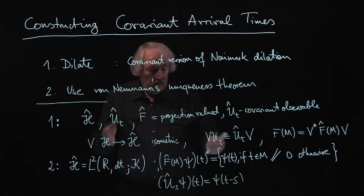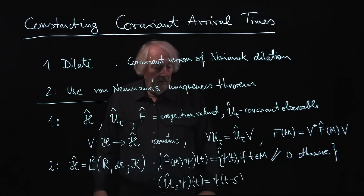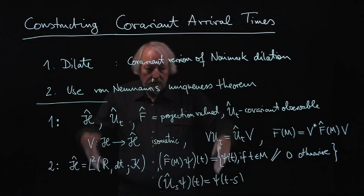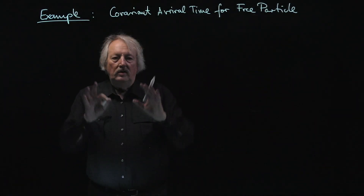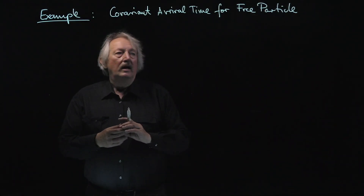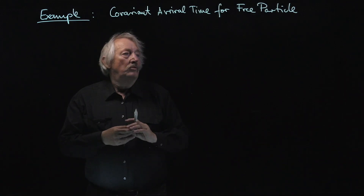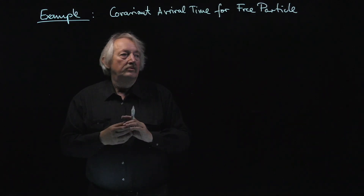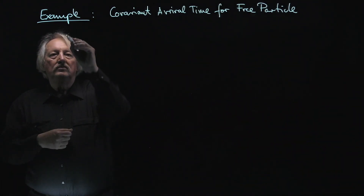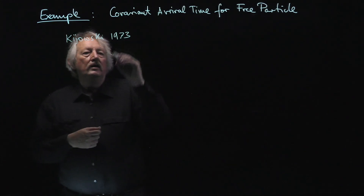We now just have to find the intertwining operators between the standard position–momentum pair and our system, and from that we get all possible covariant observables. As an example, let's apply this construction to the case of a free particle. The Hamiltonian is p²/2m. It's a straightforward question to construct all covariant observables for that. The key construction was given by Kijowski in 1973.